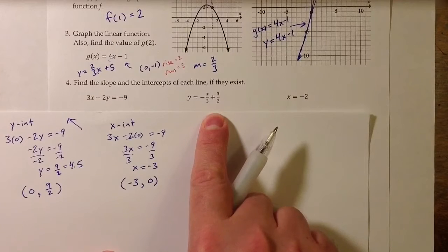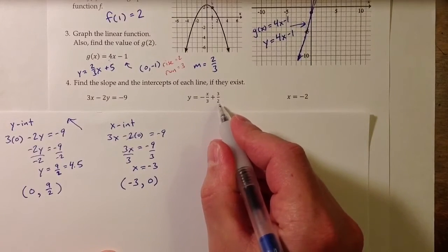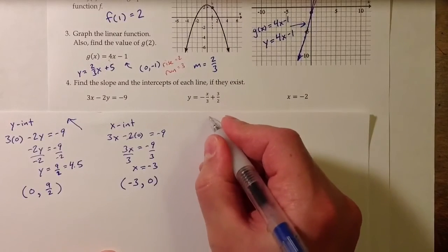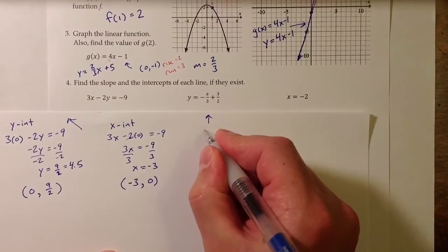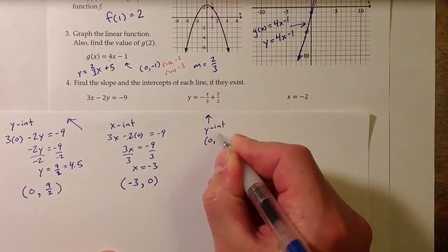For the second one, we kind of get the y-intercept for free. The y-value of the y-intercept is 3 halves, so we get a y-intercept of 0, 3 halves.